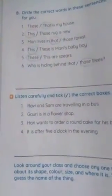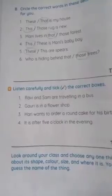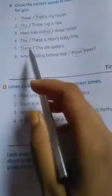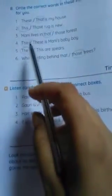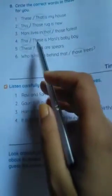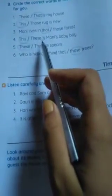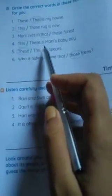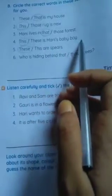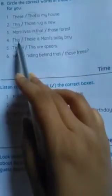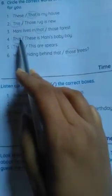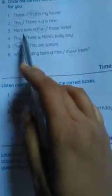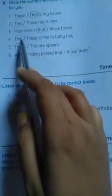Number 4: This, T-H-I-S, oblique T-H-E-S-E. This is monkey's baby boy. The correct one is 'this', T-H-I-S. Circle this one.